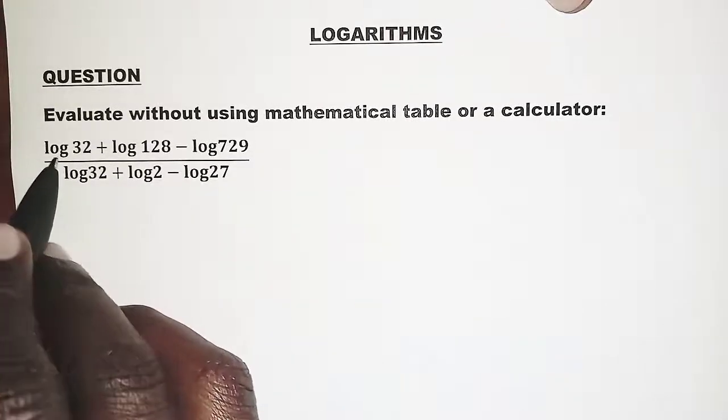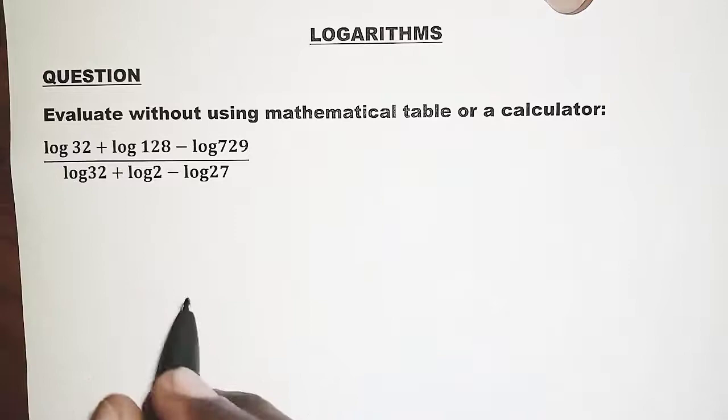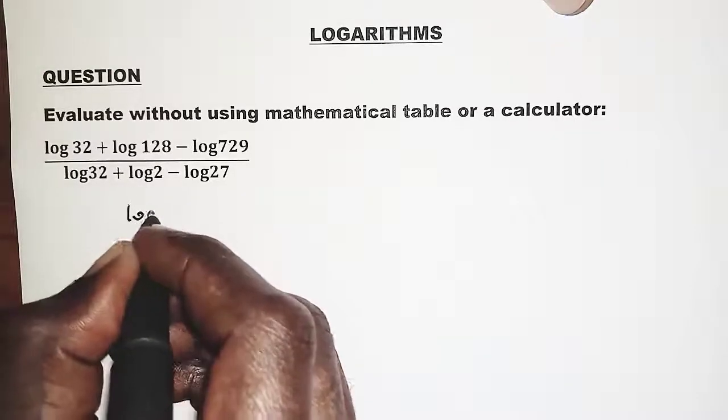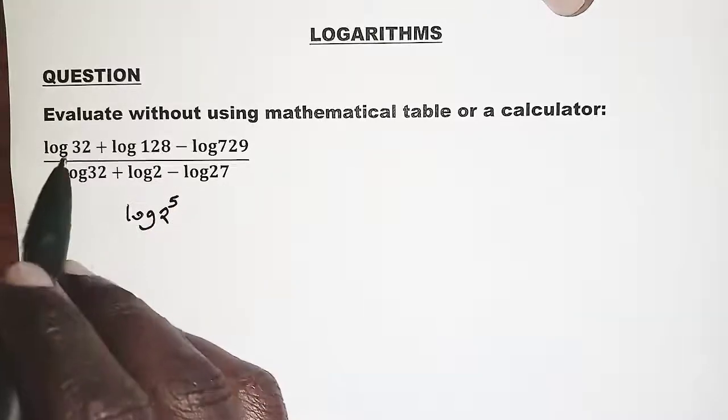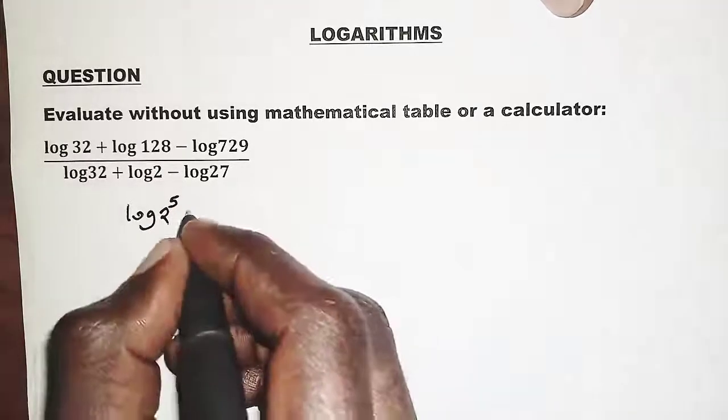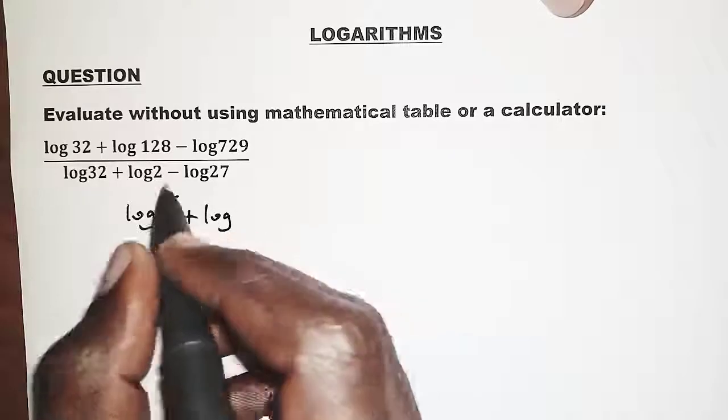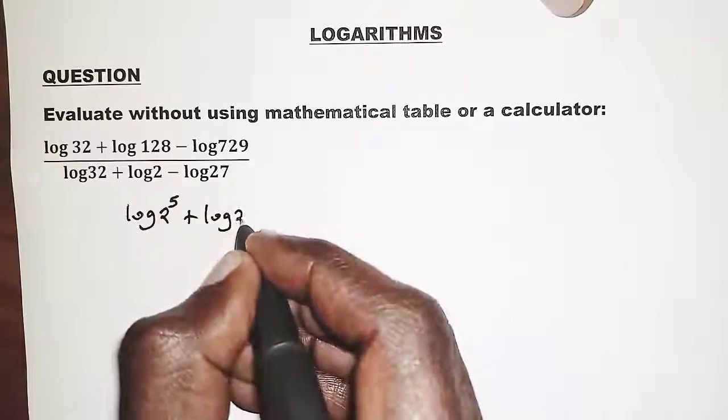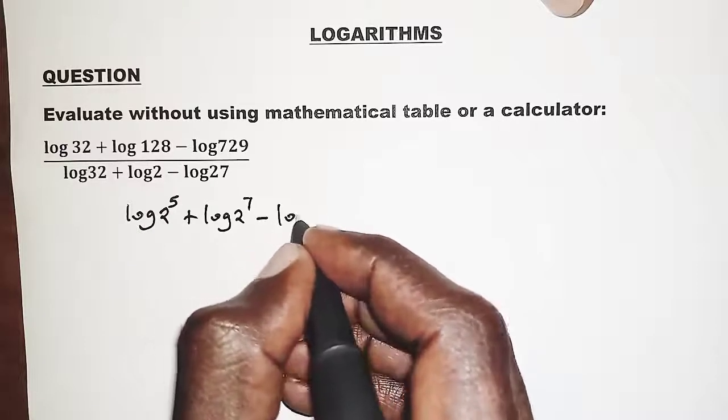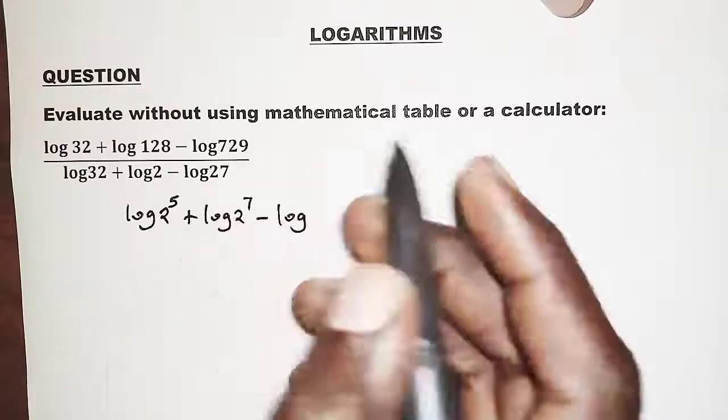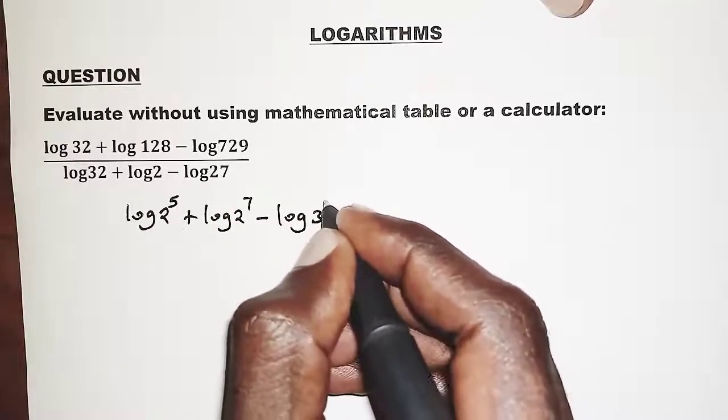We have 32. Logarithm of 32 can also be expressed as logarithm of 2 power 5. Of course 32 is 2 power 5. Plus logarithm of 128, that is 2 power 7. Minus logarithm of 729, that is 3 power 6.